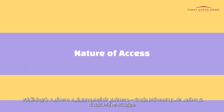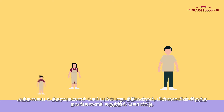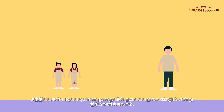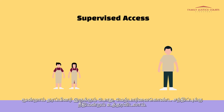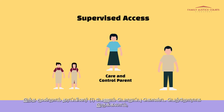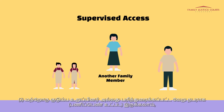When making such orders, the court, in considering the best interests of the child, may determine that access take place in a more gradual fashion. In such a situation, the court may order supervised access, being access where a third party is present during the access time. This third party may either be: one, the care and control parent; two, another family member or other prescribed person, including a domestic helper; or three, a third party agency such as a Divorce Support Specialist Agency or DSSA.